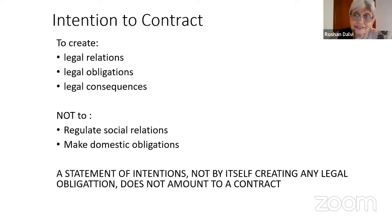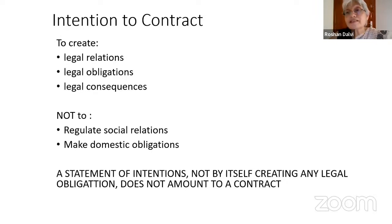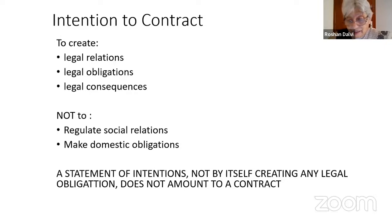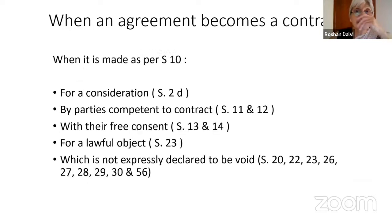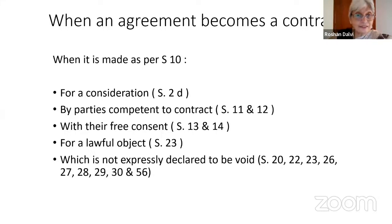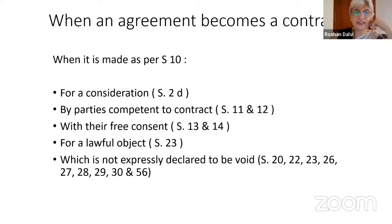This is not to regulate social relations; it is not to make domestic obligations either — for example, obligations between family members or anything of that kind. When does an agreement become a contract? An agreement, which may or may not be a contract, becomes a contract under Section 10.